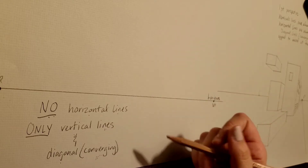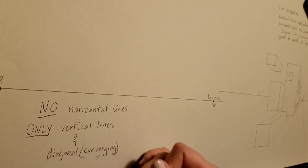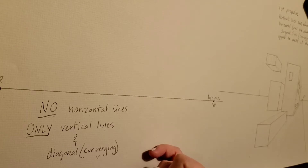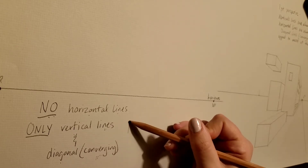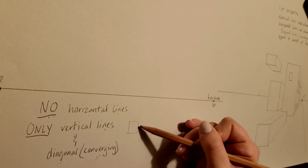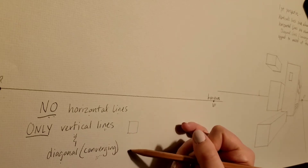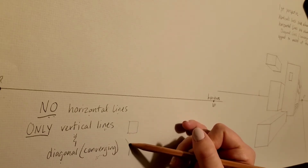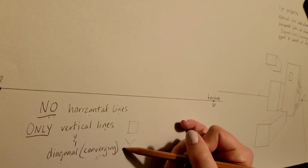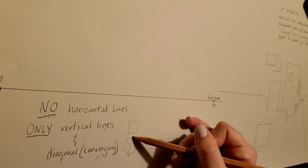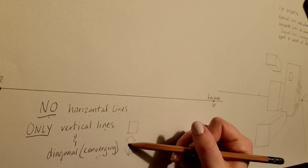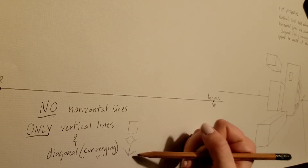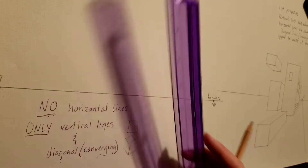The other difference is, in two-point perspective, rather than drawing the face of the box like in one-point perspective and vanishing it, in two-point perspective you're actually on the corner of the box. You're not in front of it — you're on the edge of it. So you're drawing it from the corner first.